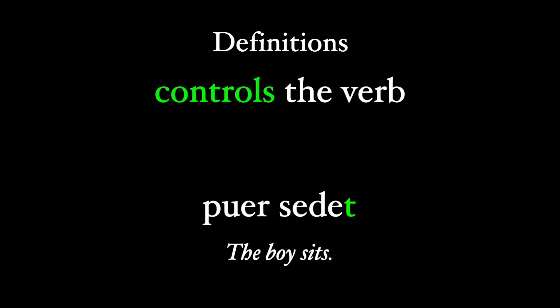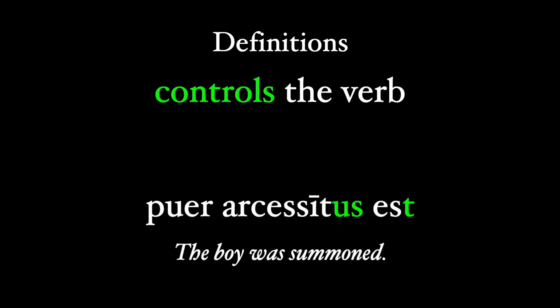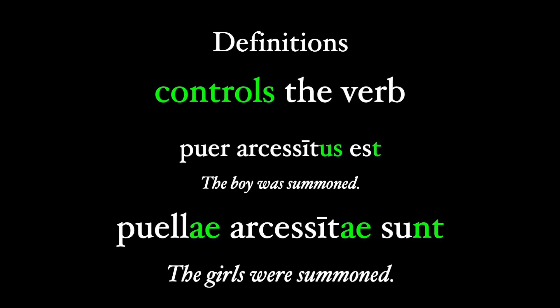So here, the boy sits, puer sedet, but the boys sit, pueri sedent. And puer arcessitus est, but puellae, the girls, arcessitae sunt. When we change the subject, we also change the verb. So in Latin, this subject controls the verb.